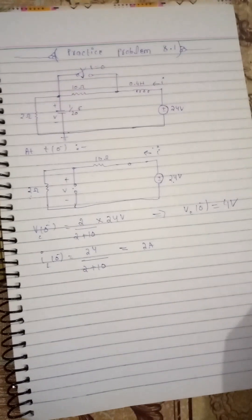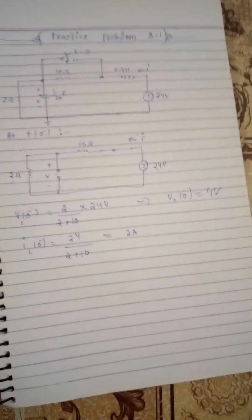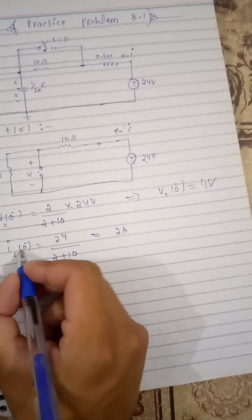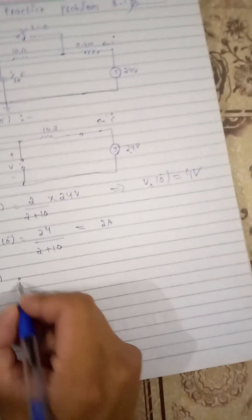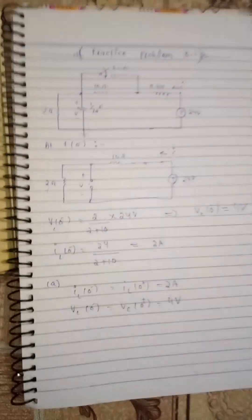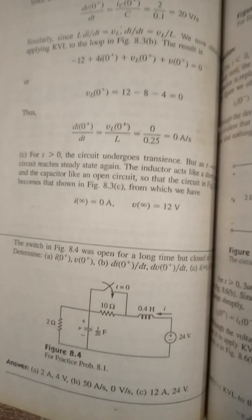By the continuity rule, the voltage of a capacitor does not change immediately and the current of an inductor does not change immediately. Therefore: iL(0⁻) = iL(0⁺) = 2 amperes, and vc(0⁻) = vc(0⁺) = 4 volts. That completes part one. In part two we have to find di(0⁺)/dt and dv(0⁺)/dt.